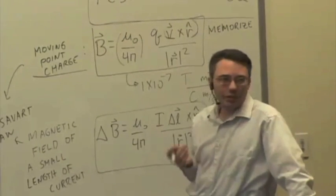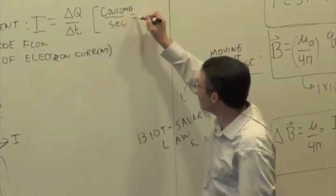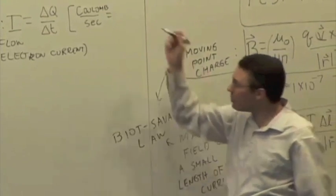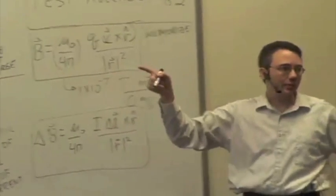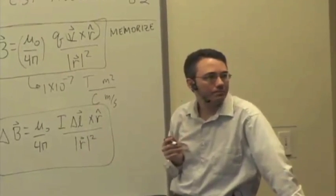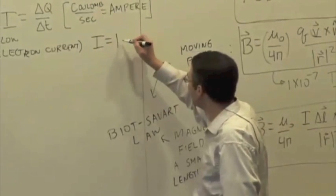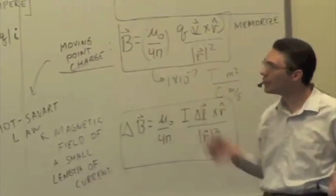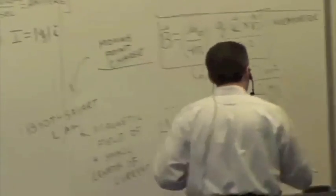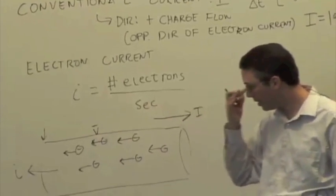So if little i gives the number of electrons per second and big I gives the number of coulombs per second — by the way, a coulomb per second has a special name, that's called an amp. Conventional current is measured in amps. How do I relate the two? Capital I equals the magnitude of the charge of the electron times little i, because coulombs times a number per second gives coulombs per second. We can also relate the electron current and therefore the conventional current to the drift speed.